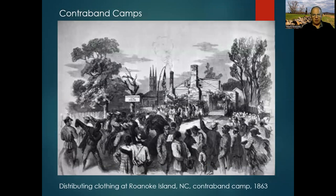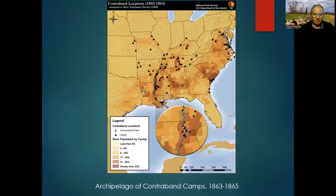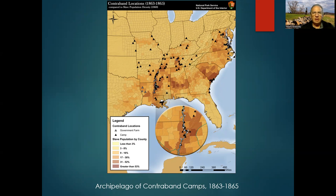On a much larger scale were contraband camps — honestly, these were concentration camps where free people were brought into encampments, obliged to stay, and worked under Union military supervision directly. Some of these contraband camps were more or less acceptable, and some were just overcrowded, filled with disease, and very problematic. A map shows the locations marked by pyramids — quite a few in Virginia, along the coast, and many in the Mississippi River Valley — with tens of thousands of contrabands in those camps.